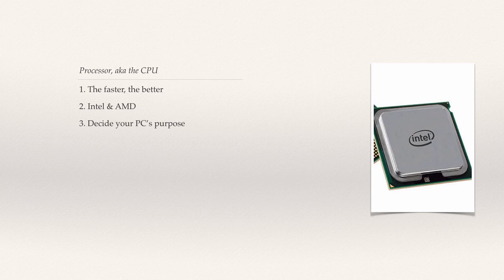Processor choice will continue with the socket, which is where you mount your processor. Currently Intel has two types: consumer-oriented 1150 and pro-user-oriented 2011-3. Older 1155 and 2011 are still available but not recommended. Also, just a few days ago Intel introduced a new family of processors that will be running on a different 1151 socket.